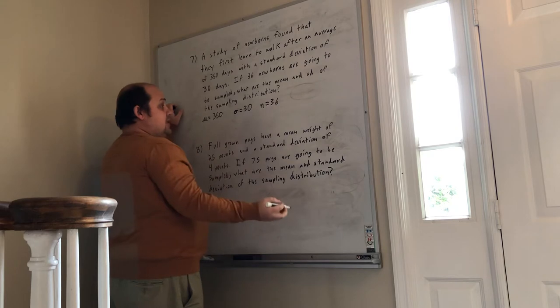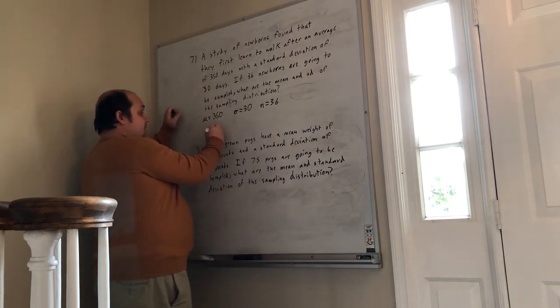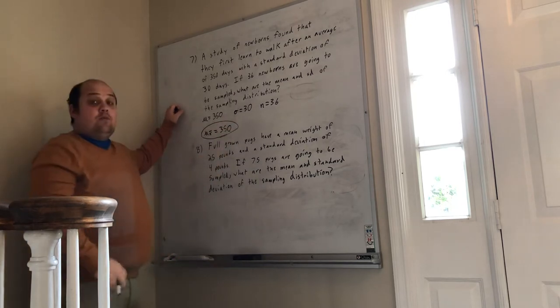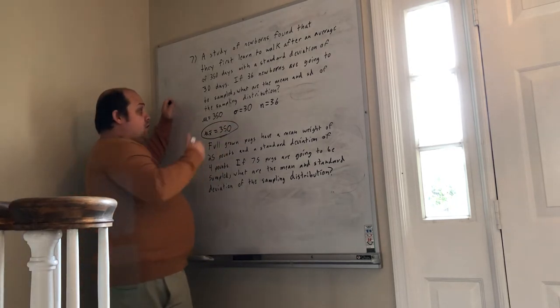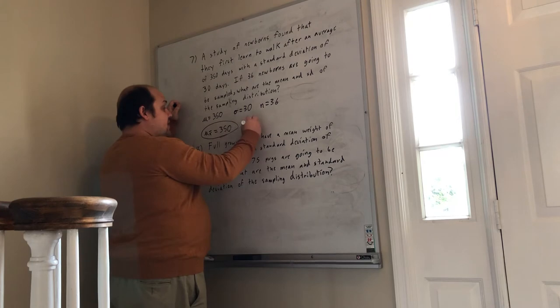Now apply my formulas. When I find the mean of the sampling distribution, I don't do anything. I just keep exactly what the mean was from the prompt. When I find the standard deviation of the sampling distribution, I take the original standard deviation divided by the root of n.